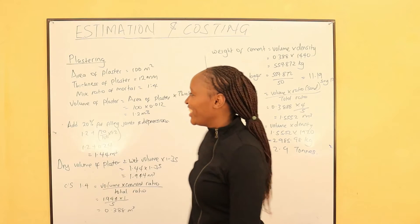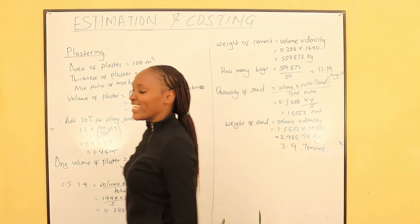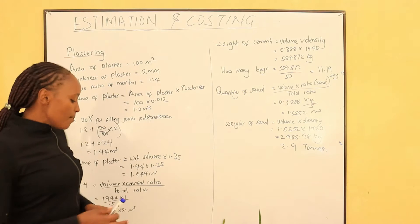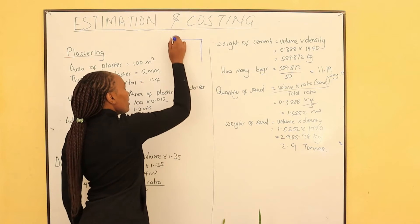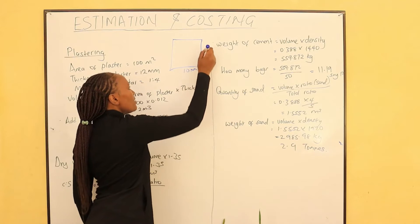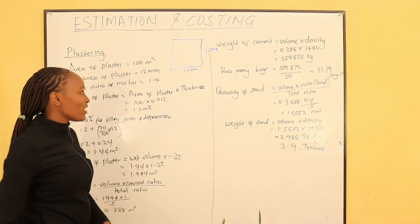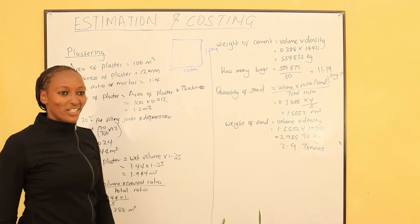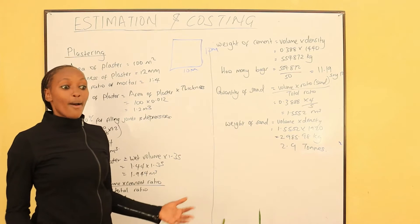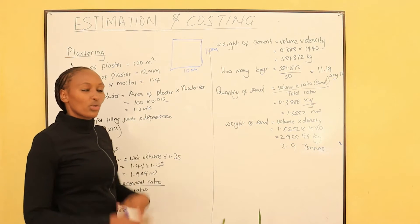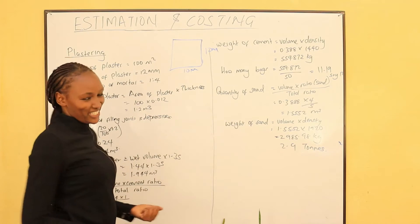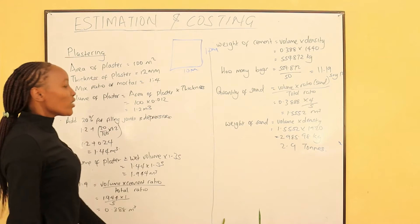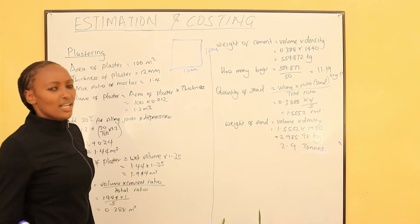Welcome to this class. In our class today, the area for the plastering — we shall consider an area of 100 meters square. Maybe we had a wall: this wall was 10 meters by 10 meters. So we want to know what is the quantity of cement and the quantity of sand we shall require to do plastering on this wall. If it's a big building, we just find the total area of the walls, then we shall use the procedure. For this video, we shall consider this area of 10 meters by 10 meters of wall.